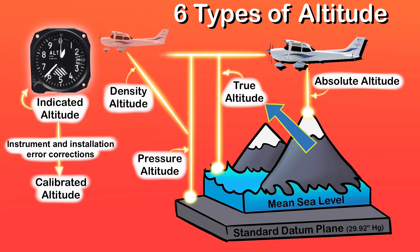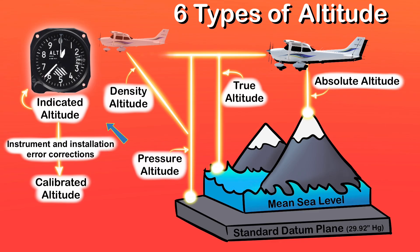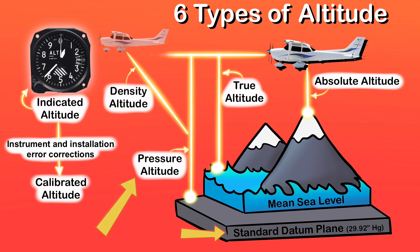Now that we've gone over all six altitudes, let's summarize them. True altitude is the height above sea level. Absolute altitude is the height above the mountain or terrain beneath you. Indicated altitude is what your altimeter shows you. Pressure altitude is the altitude shown when the altimeter is set to standard pressure, 29.92 inches of mercury. And density altitude is what the airplane actually feels.